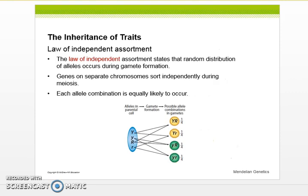Now, the law of independent assortment can be shown in a variety of ways. And believe it or not, we need all those ways so that 100% of the population really understands how that happens. So first of all, what is law of independent assortment? Well, it's a random distribution of alleles that occurs during gamete formation. Genes on separate chromosomes sort independently during meiosis and each allele combination is equally likely to occur.